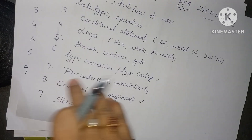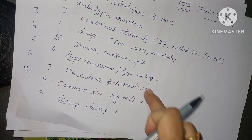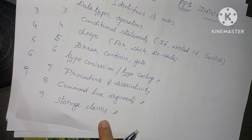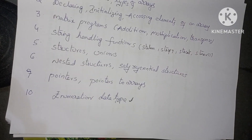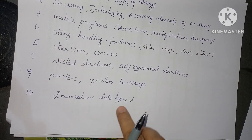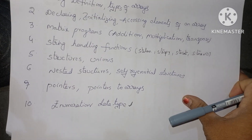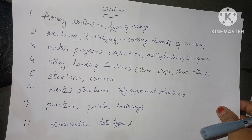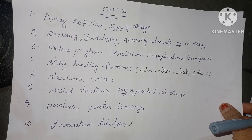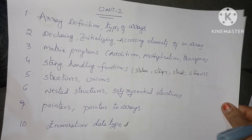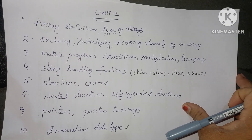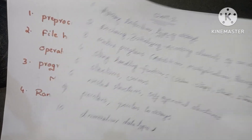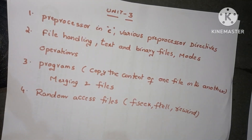As I mentioned in Unit 1, the five very important questions across units are: type conversion, command line arguments, storage classes, preprocessor directives, and enumeration data type. If you check any paper, out of these five questions, at least any three questions are compulsorily coming in your question paper.